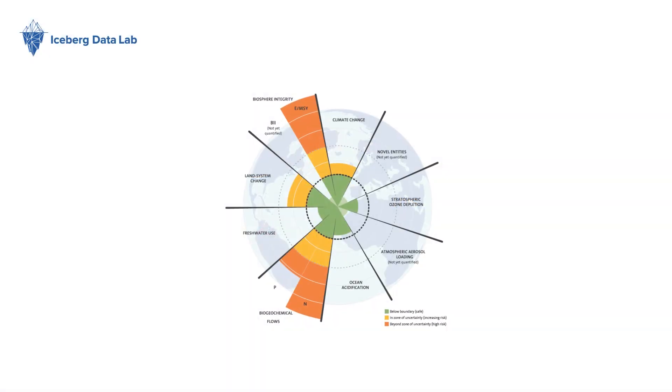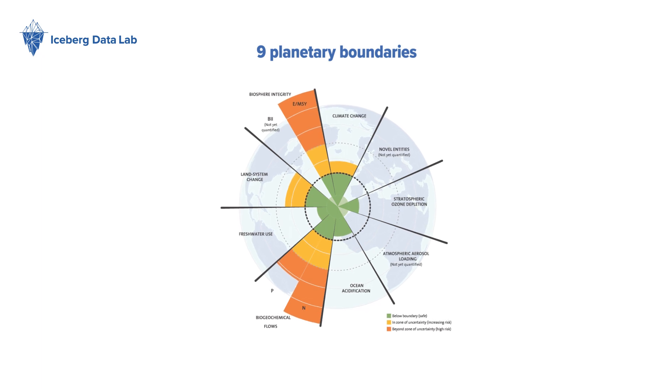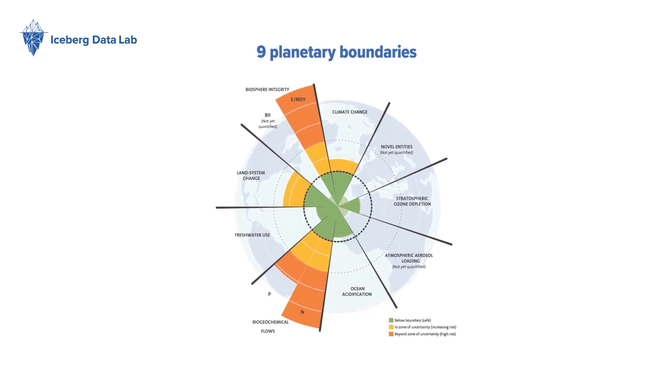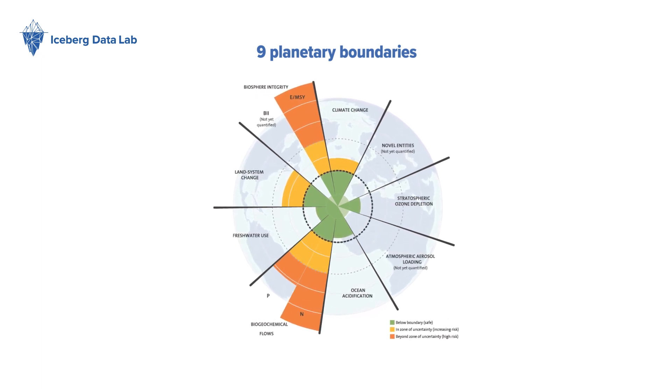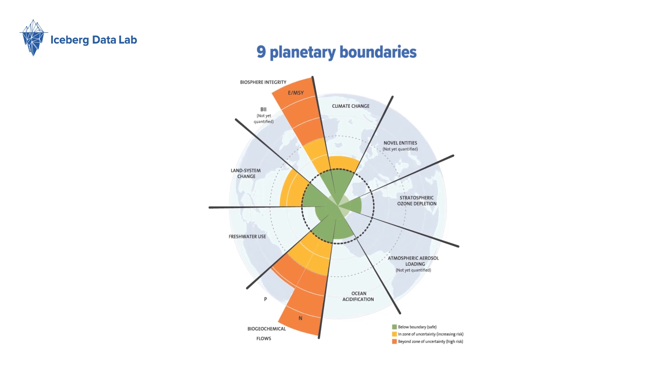A set of nine planetary boundaries have been determined. We have already gone beyond the safe operating spaces of six out of the nine boundaries.